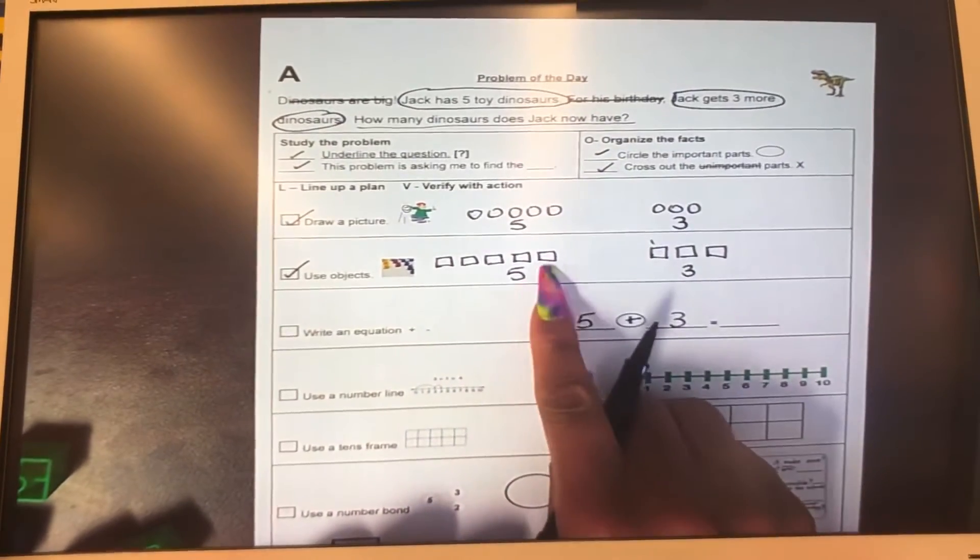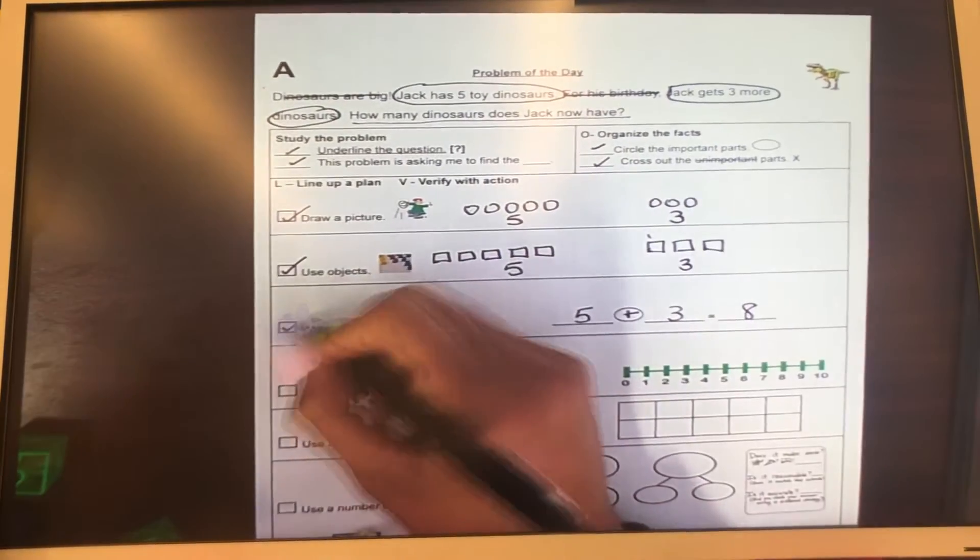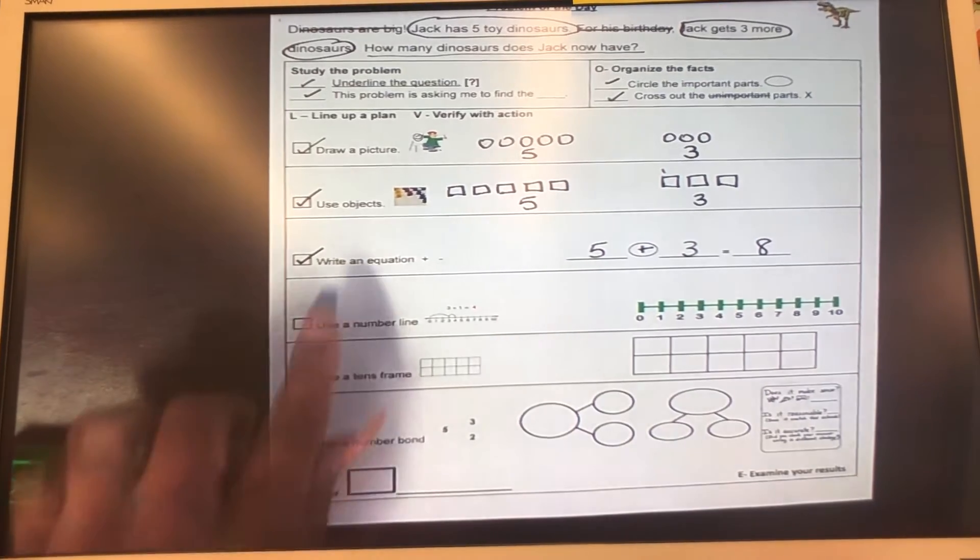Let's double check. Five, six, seven, eight. And a check for all our mathematicians that use an equation.